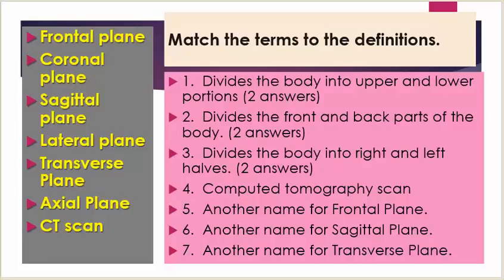Match the terms to the definitions. The terms are: frontal plane, coronal plane, sagittal plane, lateral plane, transverse plane, axial plane, CT scan. Number one: divides the body into upper and lower portions — there can be two answers for this. Number two: divides the front and back parts of the body — there can also be two answers for this.